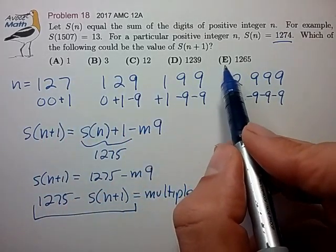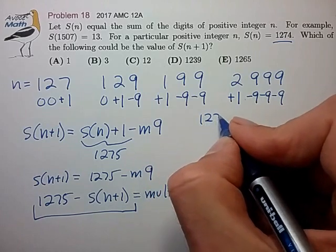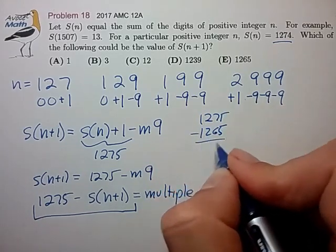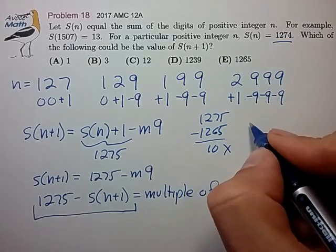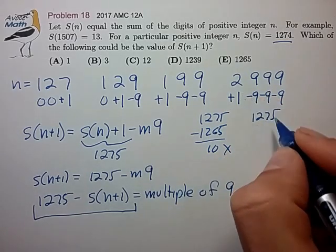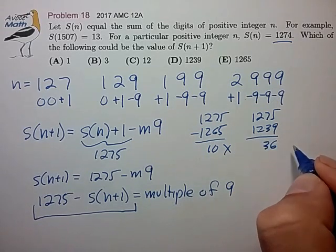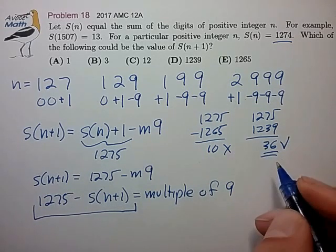So let's just go through them. For choice E, we have 1275 minus 1265, that's 10, not a multiple of 9. Choice D, that's 36, that is a multiple of 9. So that is probably the correct answer.